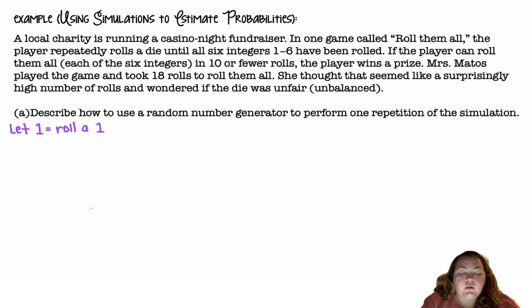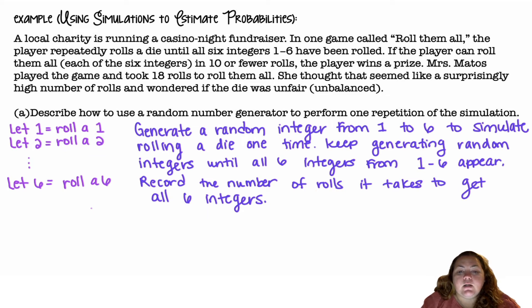Describe how to use a random number generator to perform one repetition of a simulation. Let one equal rolling a one, let two equal rolling a two, all the way to six equal rolling a six. Then generate a random integer from one to six to simulate rolling a die one time. Keep generating random integers until all six integers one through six appear. Record the number of rolls it takes to get all six integers. You would keep going until you've gotten all six of the numbers to appear and you would count how many total times you had to generate a number, how many rolls you had to do.